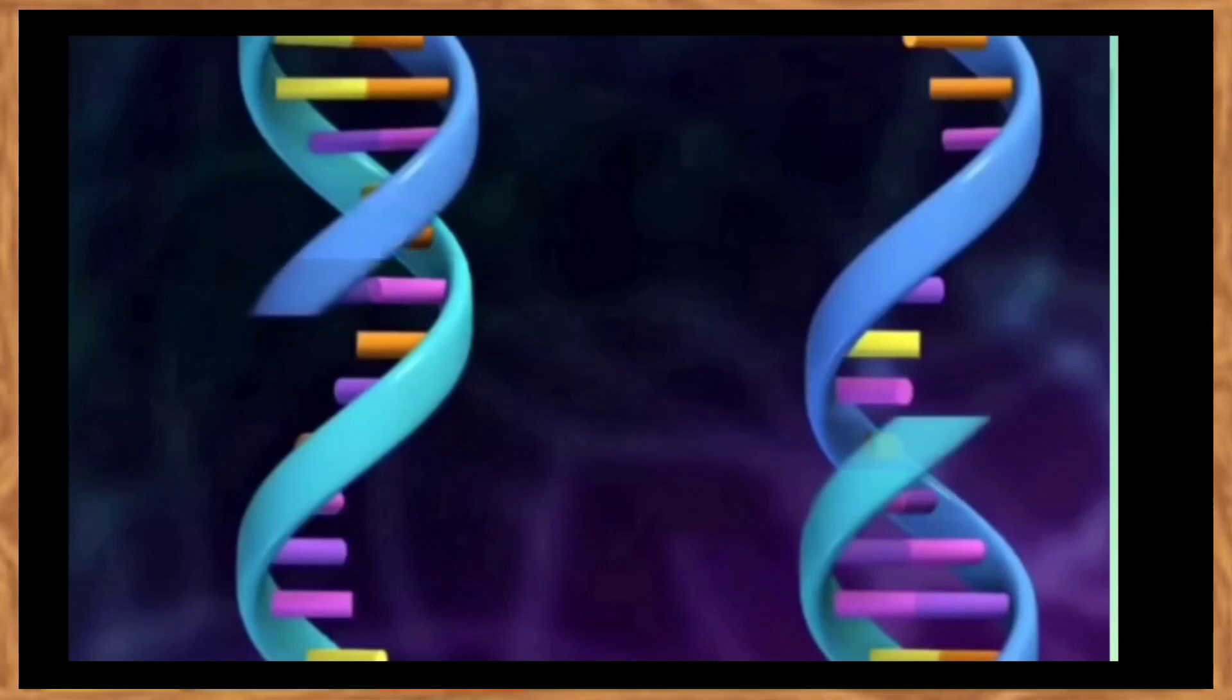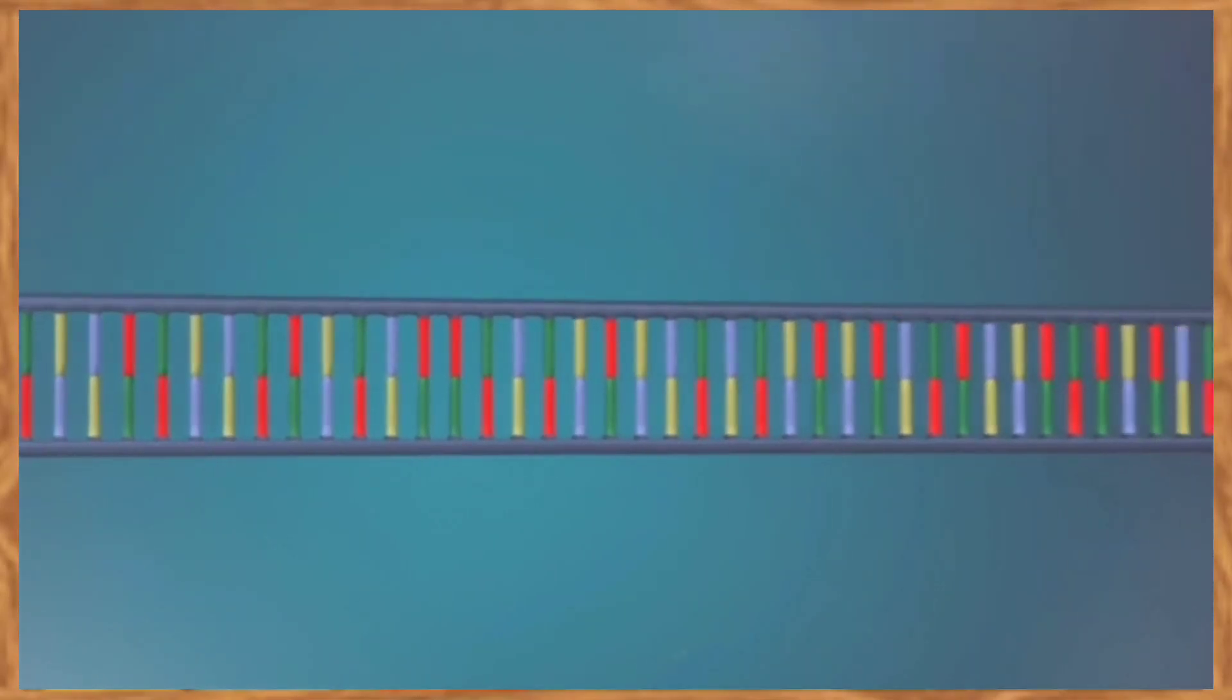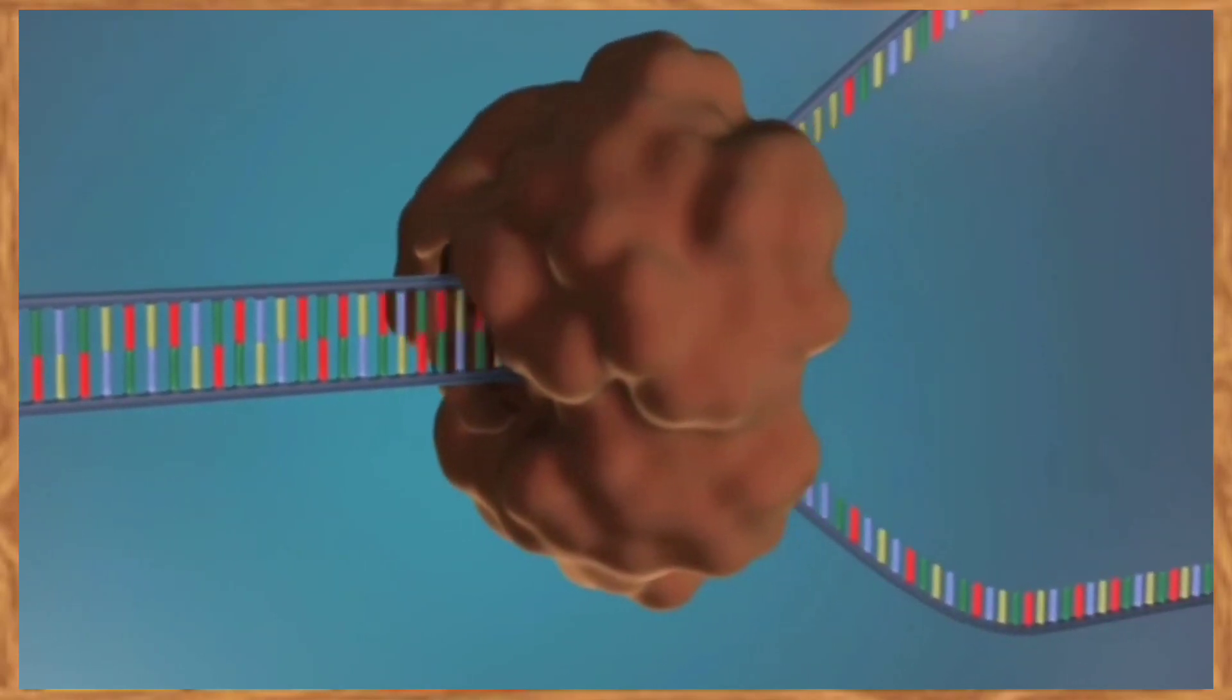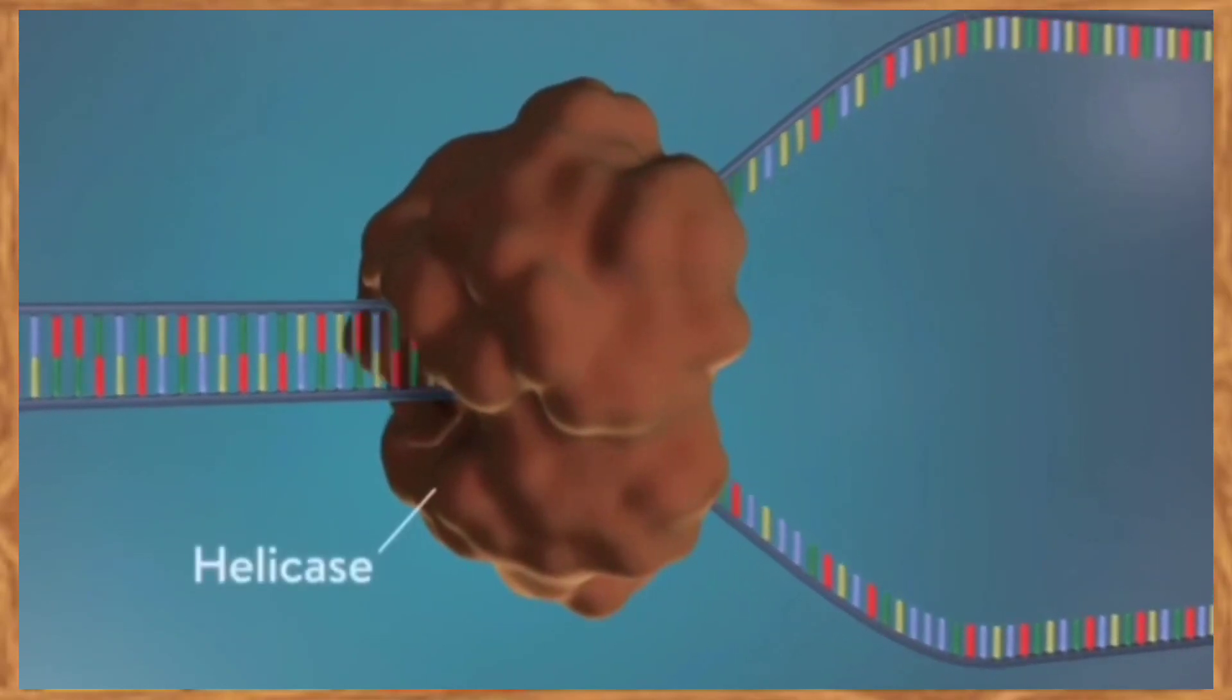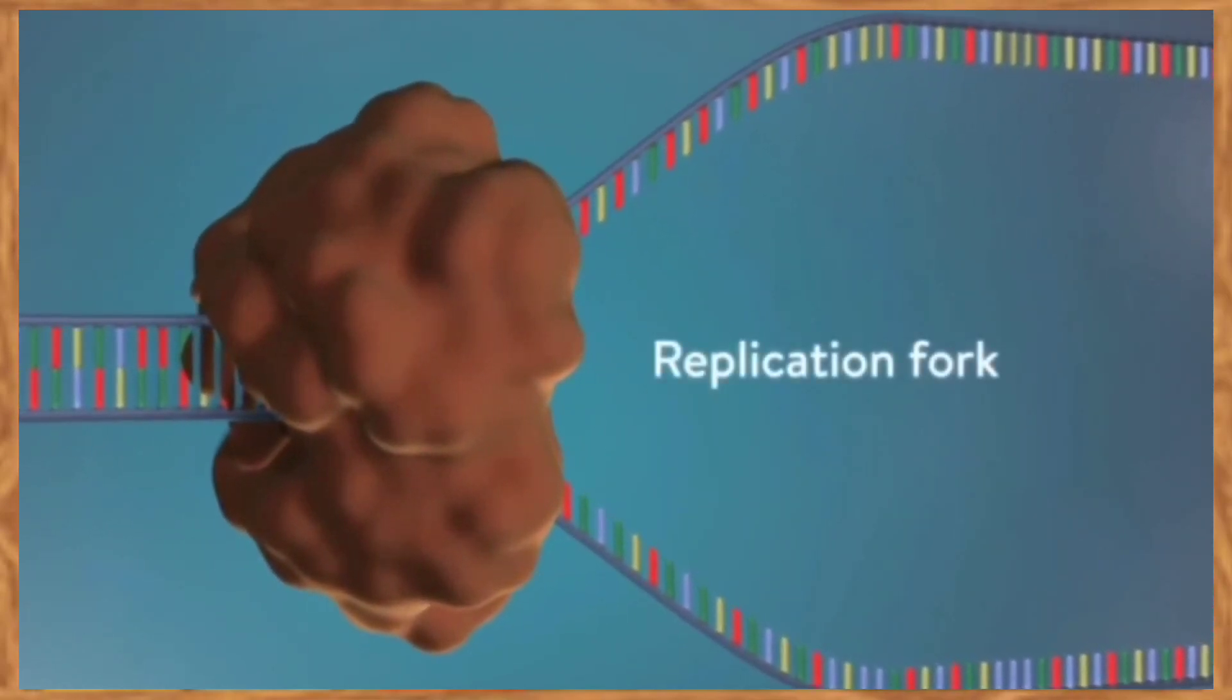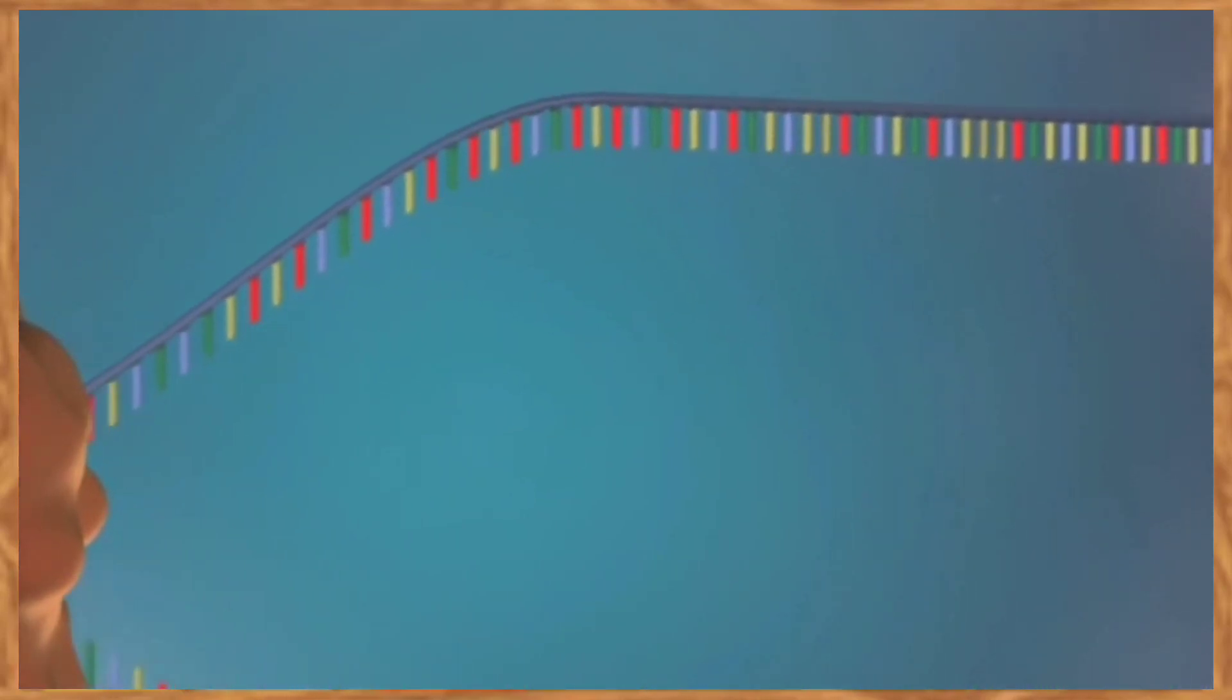The first step in DNA replication is to separate the two strands. This unzipping is done by an enzyme called helicase and results in the formation of a replication fork. The separated strands each provide a template for creating a new strand of DNA.